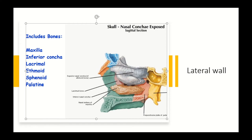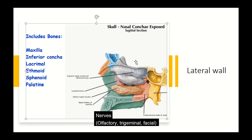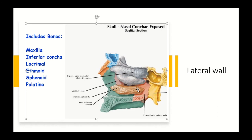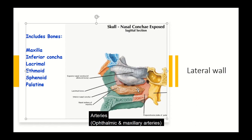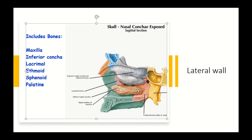Three nerves innervate the nasal cavity: the olfactory nerves, carrying the sense of smell through the cribriform plate to the olfactory bulb; the trigeminal nerve, carrying general sensations from the nasal mucosa; and the facial nerve (seventh cranial nerve), providing secretomotor parasympathetic innervation to the glands. The arterial supply comes from branches of the ophthalmic and maxillary arteries, and venous drainage mainly follows the arteries.